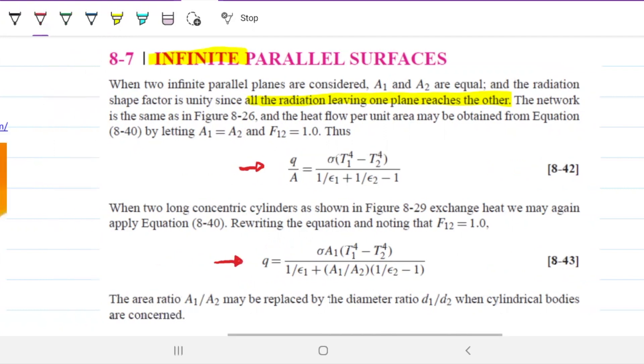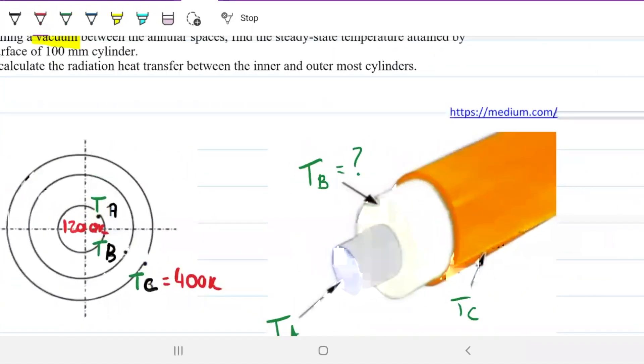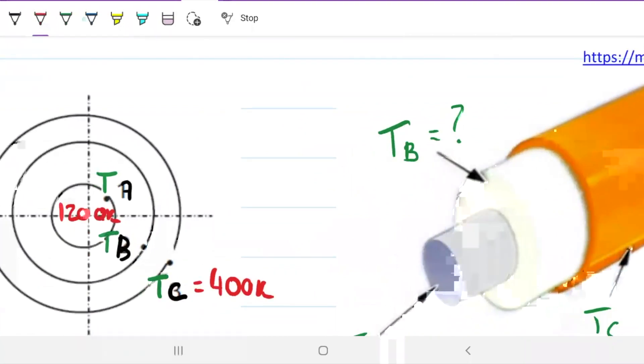Our condition is that all the energy leaving A goes to B, and it does. And all the energy leaving B goes to C, and it does. So our Q is going from the inside to the outside. So all the energy leaving this guy here goes to this guy here. There's no other place for it to go. And all the energy leaving this guy here goes to the other guy there.